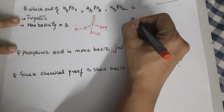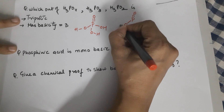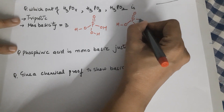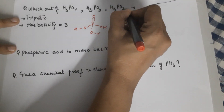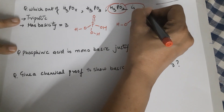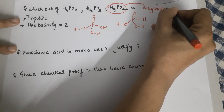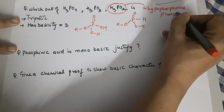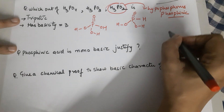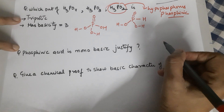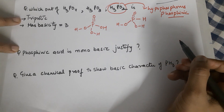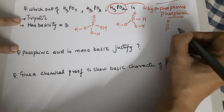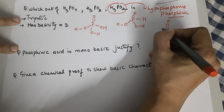Coming to the next, which is phosphorous acid: you have P=O, then P-OH, another P-OH, and then a P-H. The last one is also known as hypophosphorous acid as well as phosphinic acid — you should know this because questions are sometimes framed using the word phosphinic acid. The structure for phosphinic acid has P=O with a P-OH, an H, and an H.